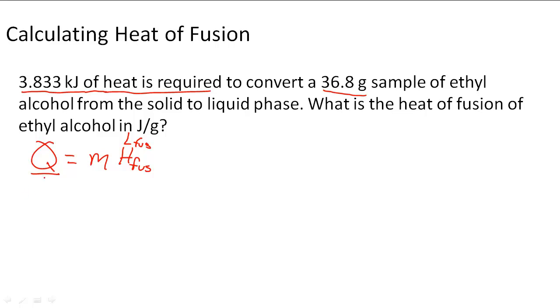To do this, we have to use that information. We need to convert this to joules because we want our answer to be joules per gram. So we already have grams but we need joules. So I'm going to convert and it becomes 3,833 joules equals 36.8 grams times the heat of fusion.